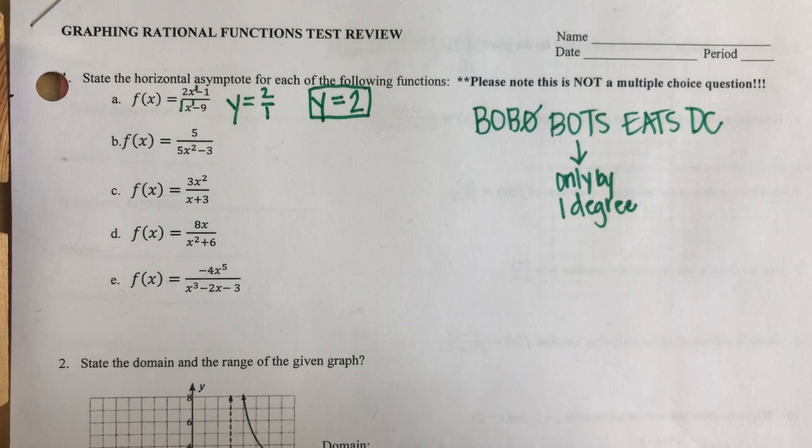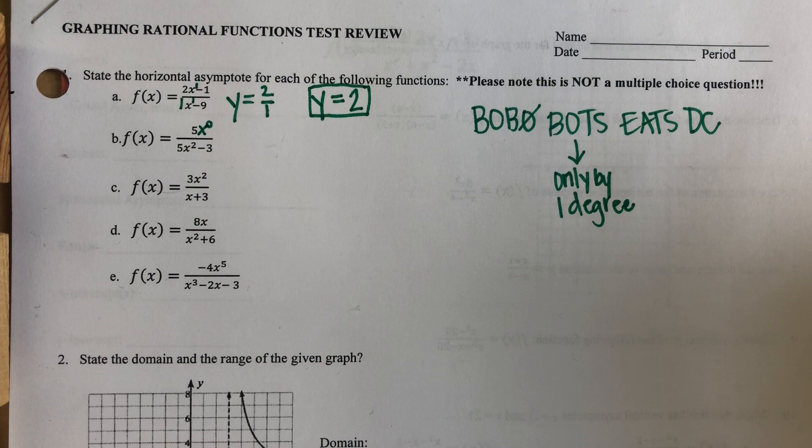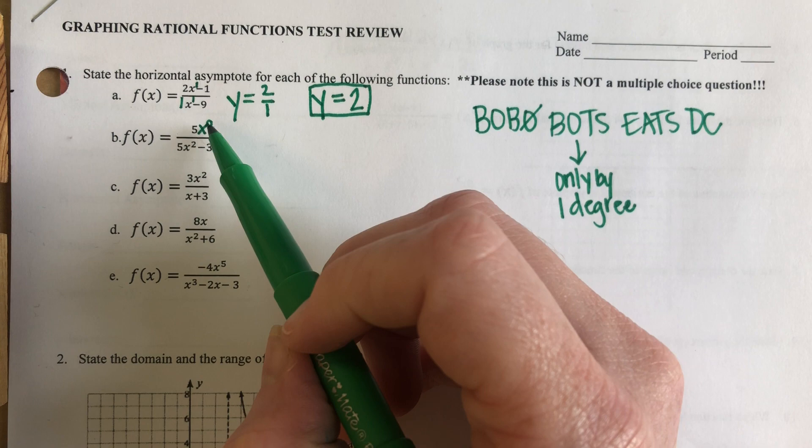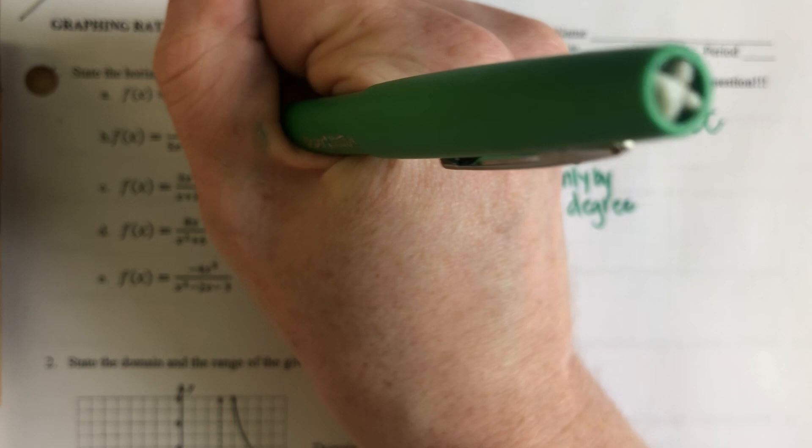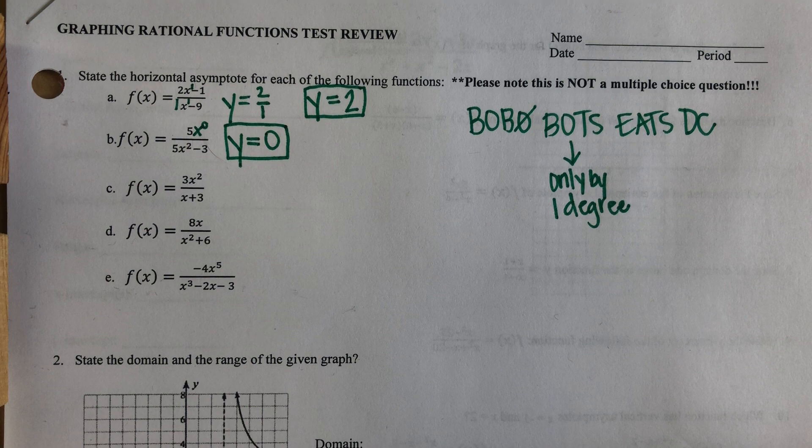Problem B. I do not have anything written here, but I understand that there is an unwritten X to the zero power. So if I compare my powers, I have zero on the top and I have two on the bottom. I see that it is bigger on the bottom, so that means Y equals zero for my horizontal asymptote.